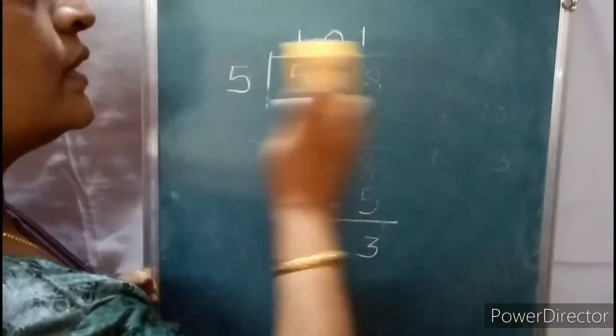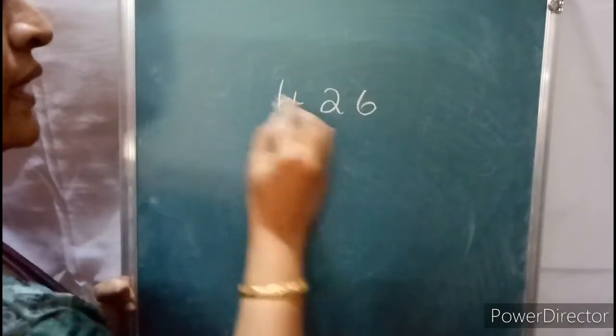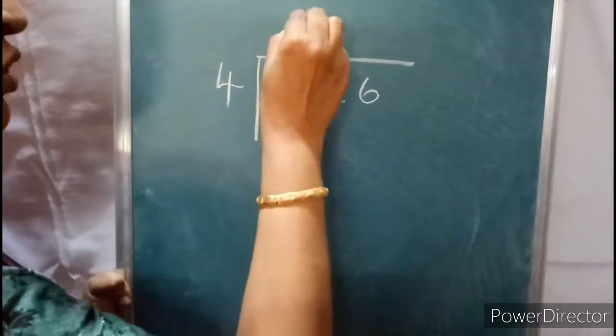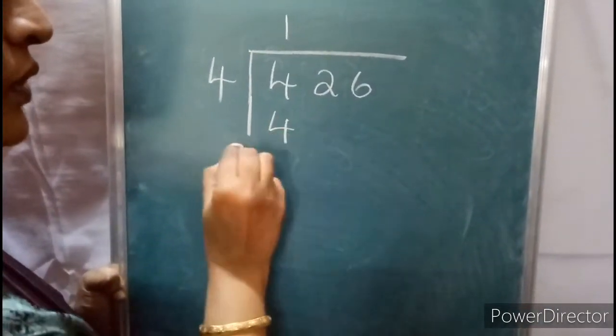Now the next number is 426 divided by 4. Again, 4 ones are 4. Now take 2.